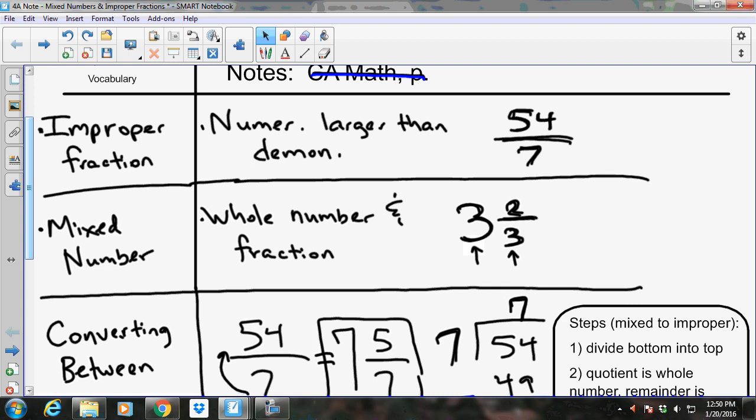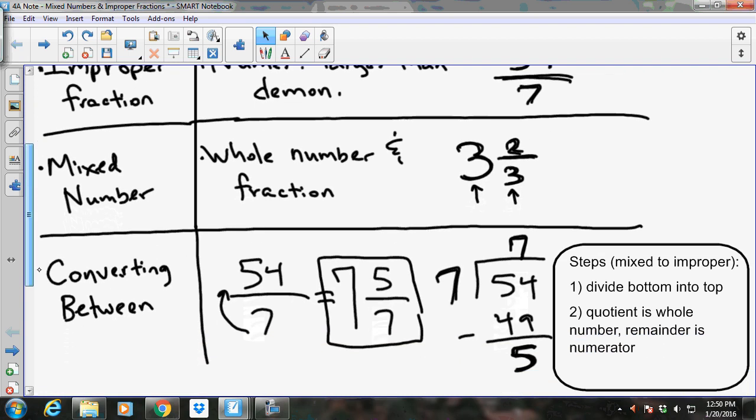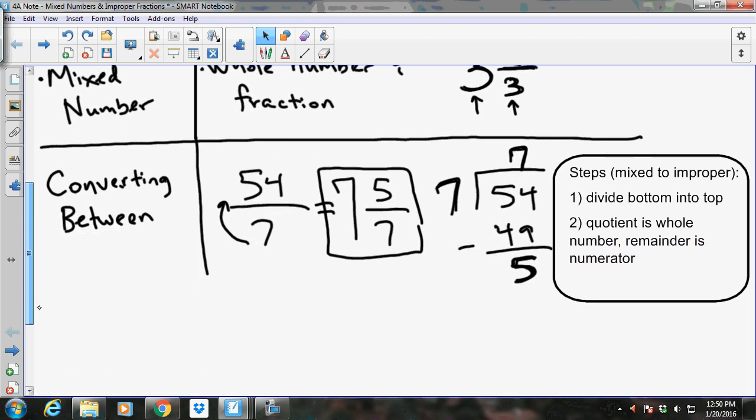So how do you get between these things? If you are given a mixed number, just like the example we had up there, like 54 over 7, you can't leave your answer like that. So what do you do? Here's the steps over here. You're given a mixed number and I'm going to abbreviate as much as possible. I encourage you to do that on your notes too. They're for you to refer to, to do your work better, to study for the test. So you're given a mixed number, trying to get it into an improper fraction. The steps are to divide the bottom into the top.